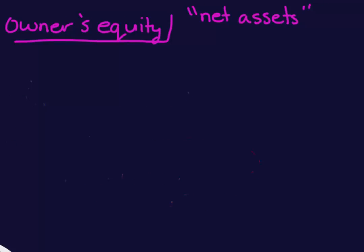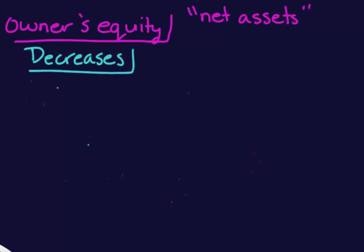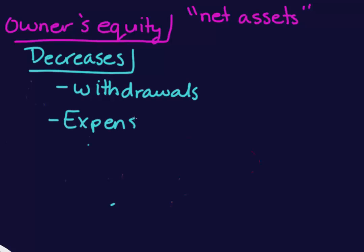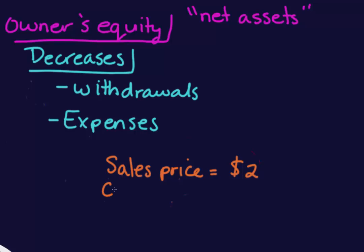Now let's talk about what decreases owner's equity. Just as investments increased owner's equity, withdrawals from the company decrease it — this is when the owner takes money out of the company. The other item that decreases owner's equity are expenses. In the pen example, we said $2 was revenue, and the 50 cents cost of the pen is the expense.